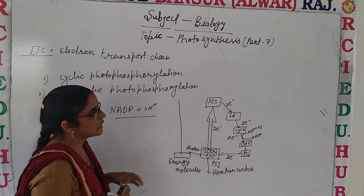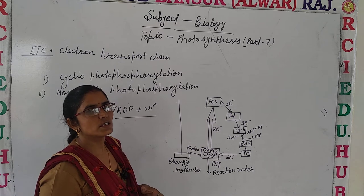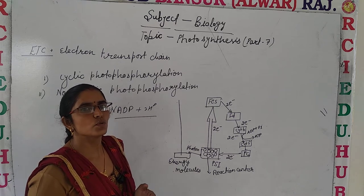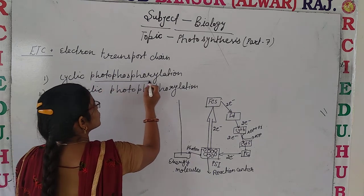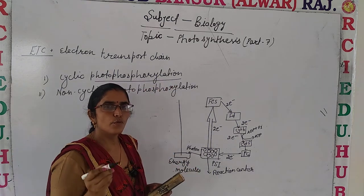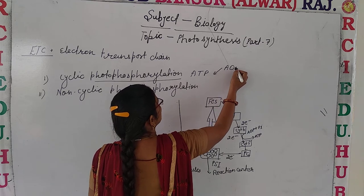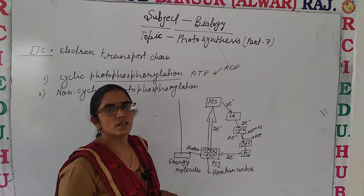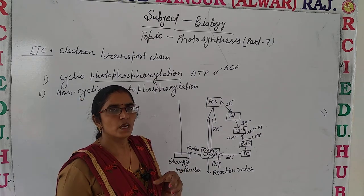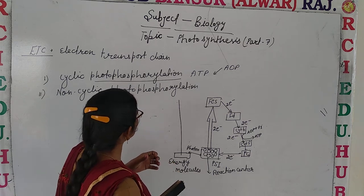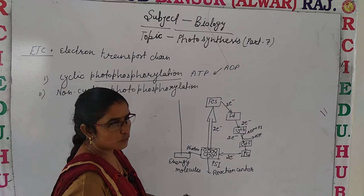We also discussed that electrons move through various electron acceptors, and these electrons are utilized in the process of photophosphorylation. Photophosphorylation means the formation of ATP from ADP by utilizing the energy of electrons. These electrons move through various electron acceptors via two pathways: cyclic photophosphorylation and non-cyclic photophosphorylation.